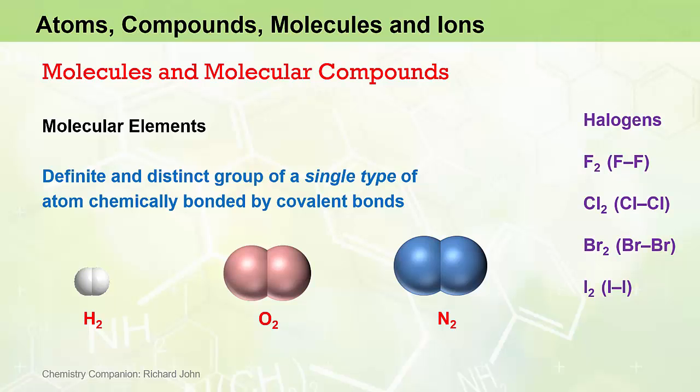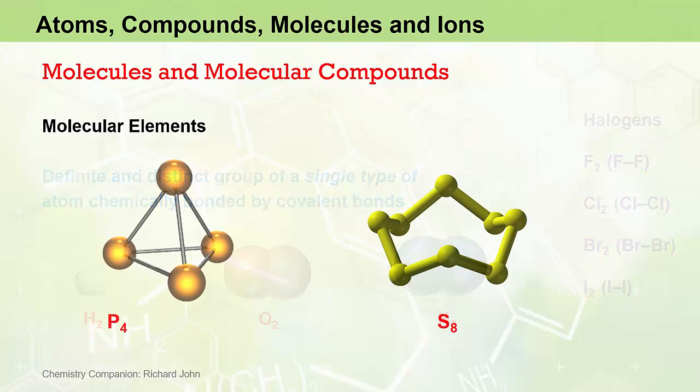Others include the halogens: fluorine F2, chlorine Cl2, bromine Br2, and iodine I2. A couple of unusual ones include the phosphorus molecule P4 and the sulphur molecule S8. So just be aware that molecules are not just molecular compounds — they can also be molecular elements.